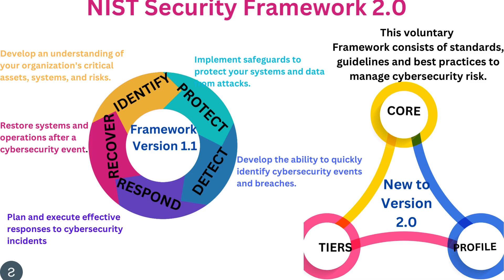Let's go through the component details. The NIST framework version 1.1 has five components: Identify, Protect, Detect, Respond, and Recover. The first one, Identify, means developing an understanding of your organization's critical assets, systems, and risks. Protect means implementing safeguards to protect your systems and data from attacks. Detect means developing the ability to quickly identify cybersecurity events and breaches.